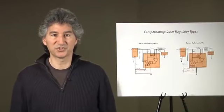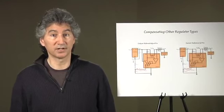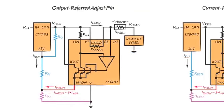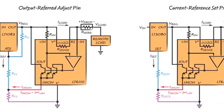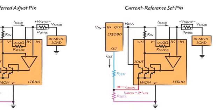In the lab demonstration, the I-OUT pin was used to provide a sinking current to control the output of a regulator with a ground-referred adjust pin. The LT6110 can also provide a sourcing current via the I-MON pin to control a regulator with an output-referred adjust pin such as the LT1083 or a regulator with a current reference set pin such as the LT3080.